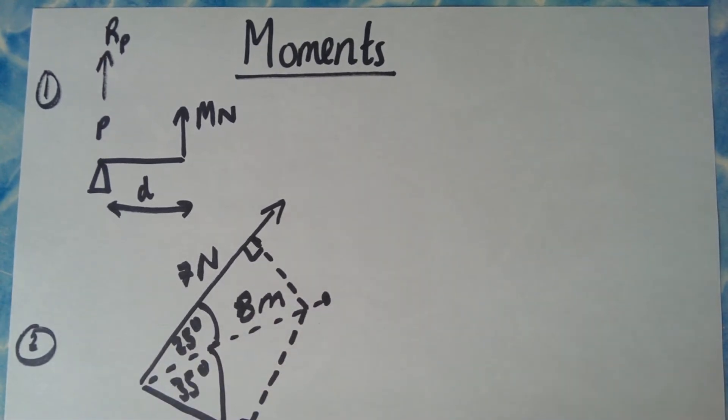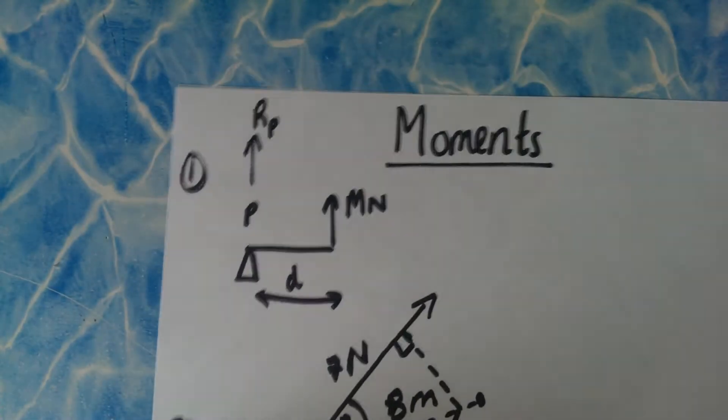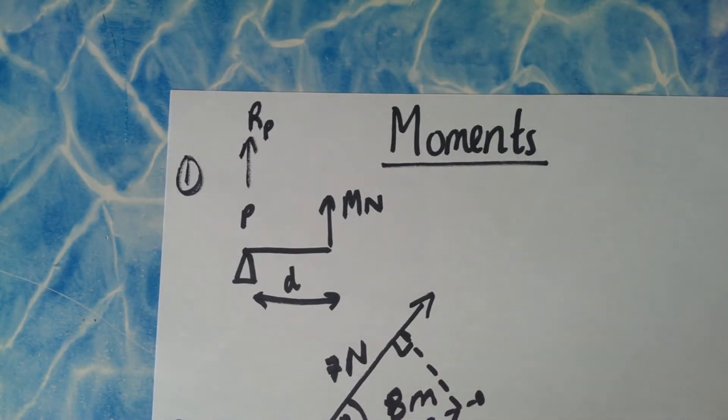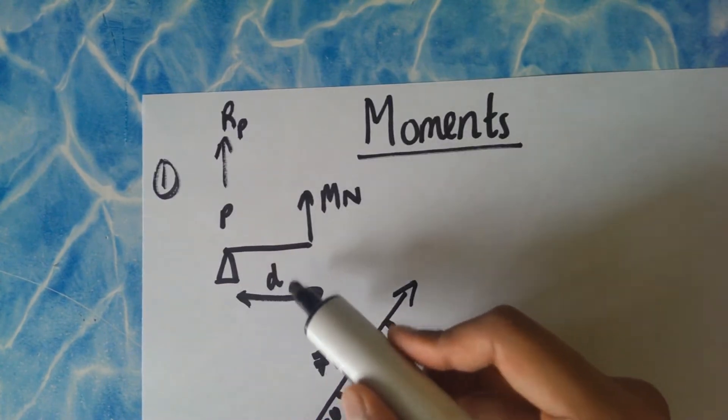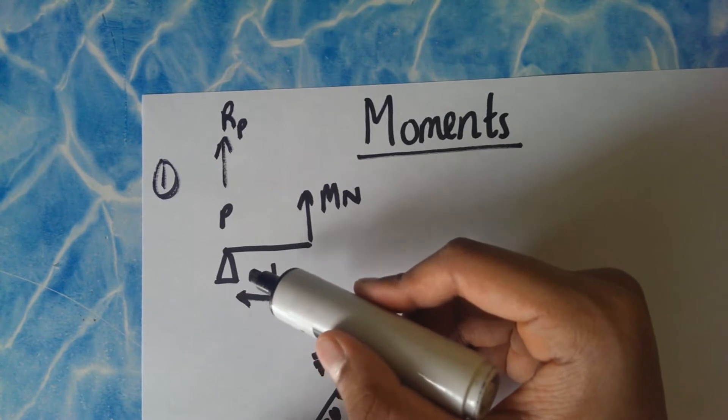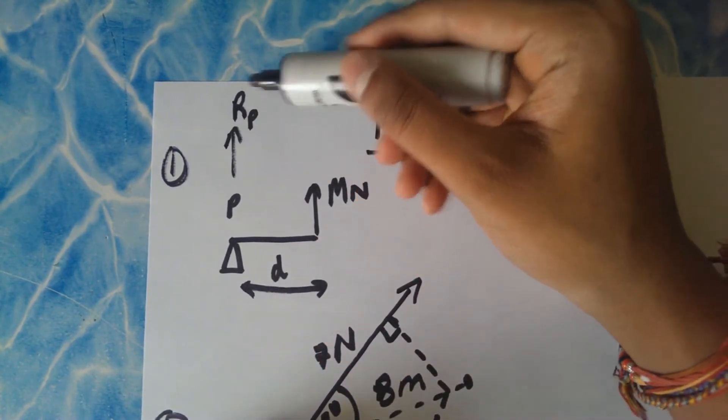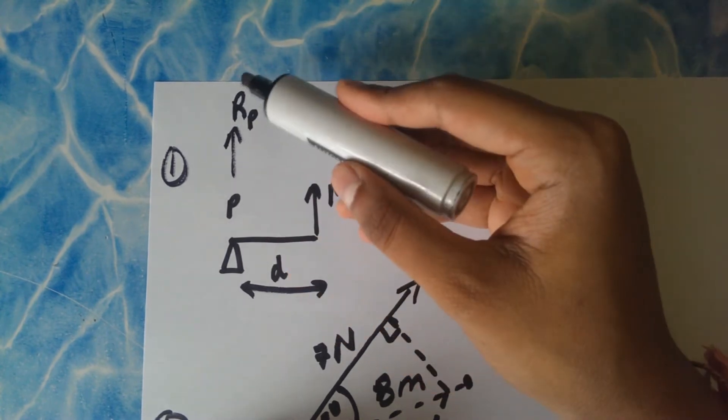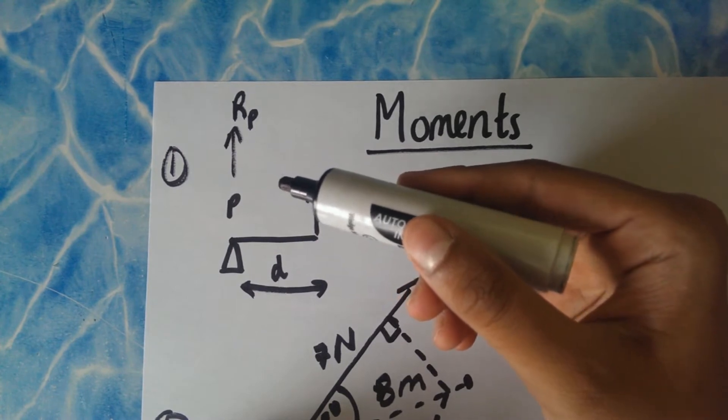So the first thing to consider is Diagram 1 which is over here. This diagram basically explains the basics of moments. In most moments questions you'll get there will be some sort of pivot which you have to consider. There might be more than one pivot per question. If there's more than one, each pivot has a reaction force called R. So if the pivot is called P, usually you just call the reaction force RP. This is a force you have to consider in every question.